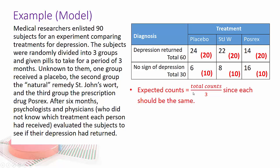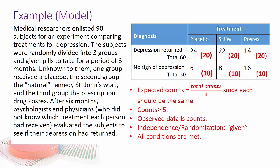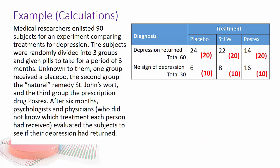Okay, then do we check the conditions? And the counts are all greater than or equal to five. The observed data is counts, so we're good there. And the independence and randomization is given, and all conditions are met. So let's go ahead and do the calculations by hand.